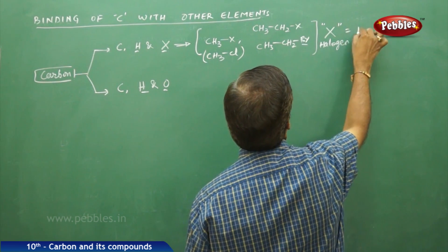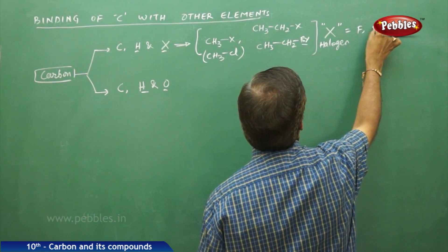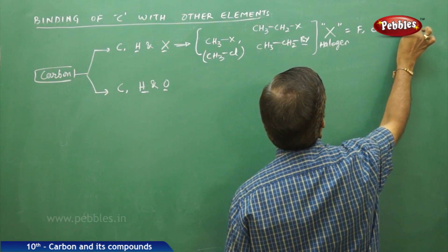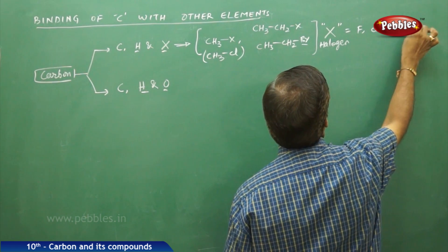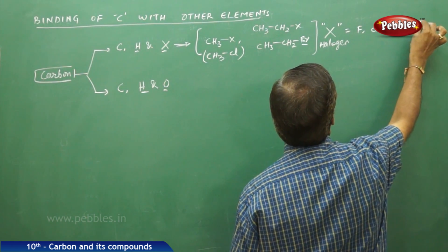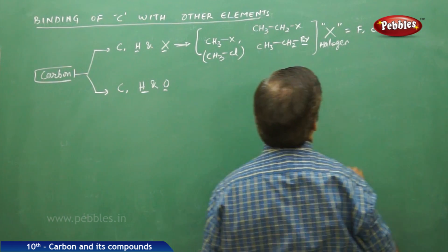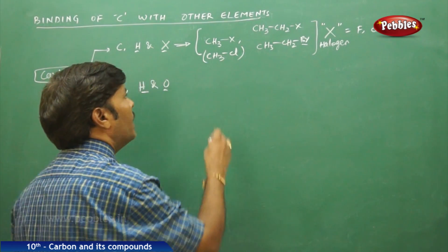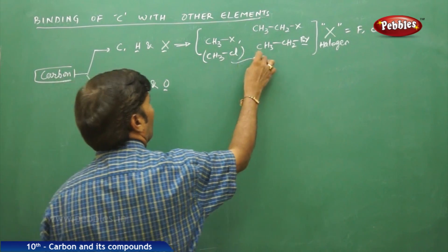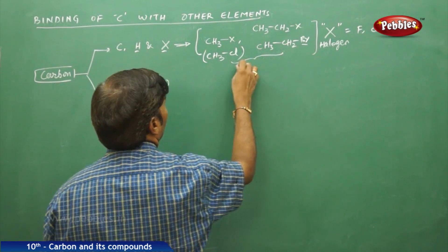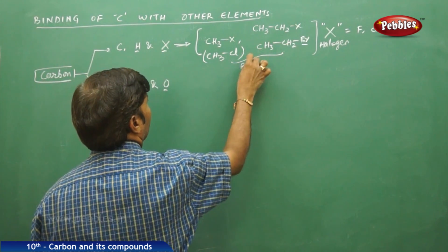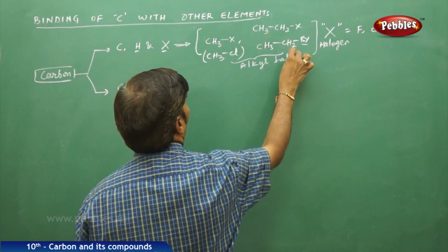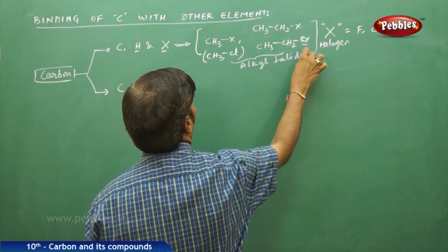The halogen X can be fluorine, chlorine, bromine, or iodine — we can take any one of these combinations. These resulting compounds are halides; in fact, we call them alkyl halides. The compounds formed from carbon, hydrogen, and a halogen are called alkyl halides.